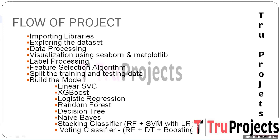The Stacking Classifier amalgamates Random Forest and SVM, utilizing logistic regression as the meta-classifier. This ensemble architecture leverages diverse models to collectively detect money laundering, while the meta-classifier refines the final prediction. The Voting Classifier combines predictions from Random Forest, Decision Tree, and boosting models, harnessing collective intelligence to achieve a consensus prediction. This ensemble approach enhances the overall model's ability to discern various money laundering patterns.